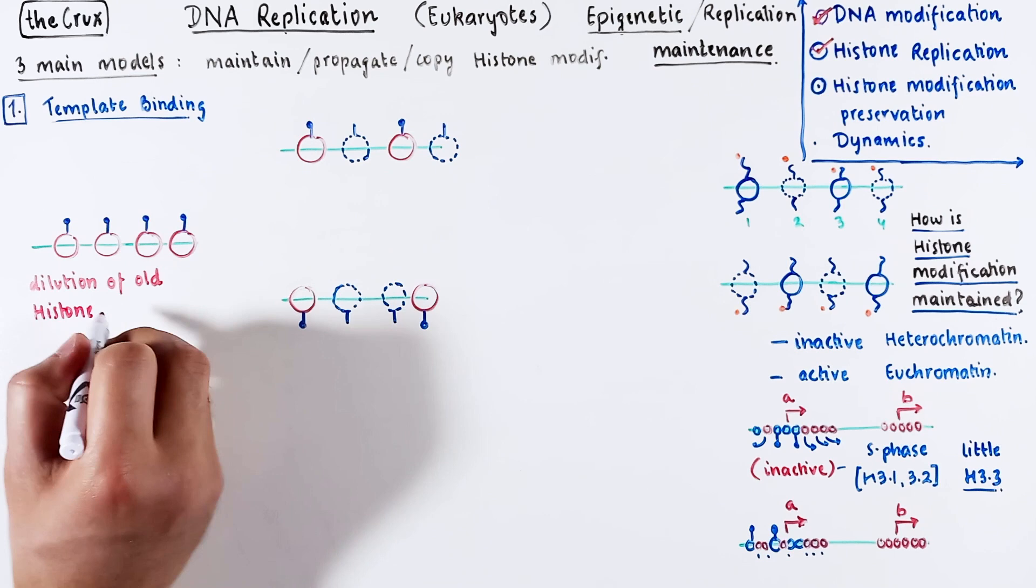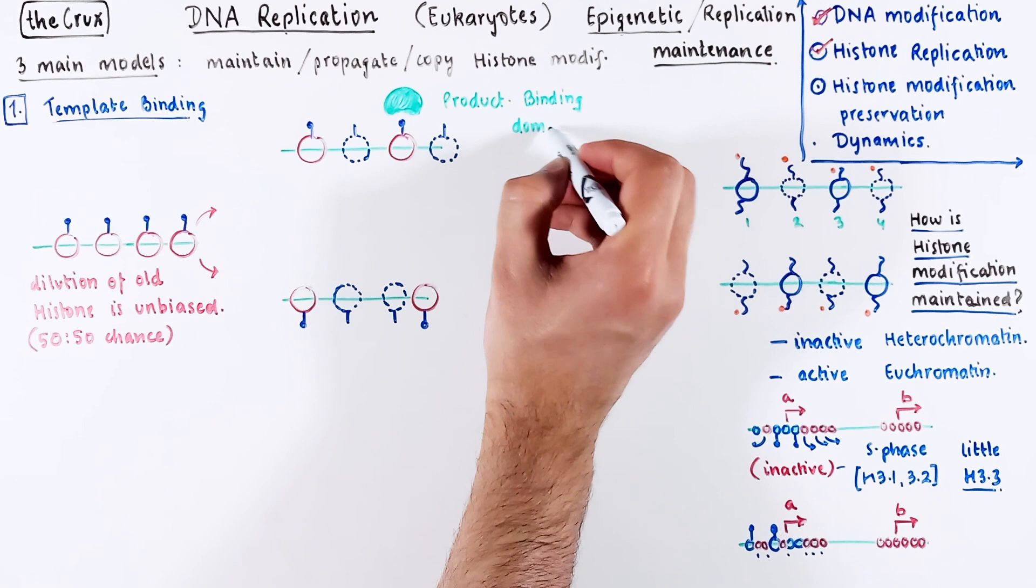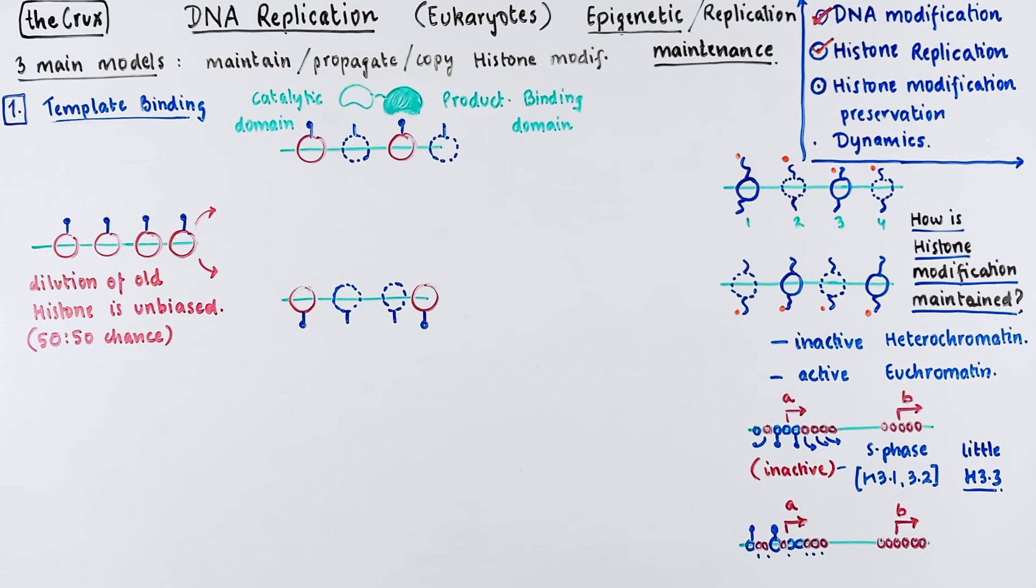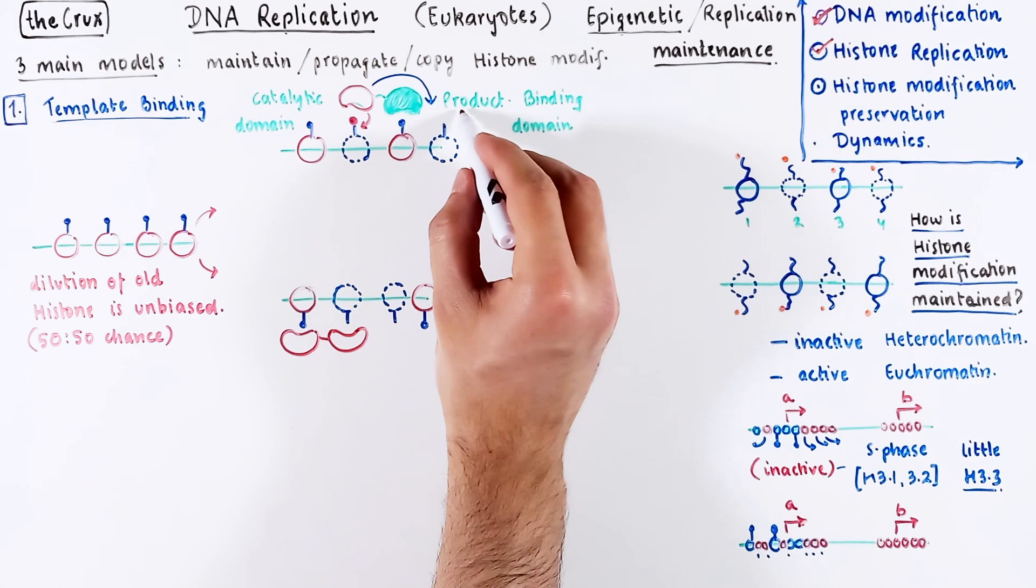There are specific proteins that can recognize existing histone modifications. These proteins have the product binding domains. In this case, the product is a specific histone modification. This protein usually has a partner which contains a catalytic domain that can recognize the adjacent histones and its empty tails and adds the same modification which the product binding domain has recognized. This happens on both daughter DNAs.